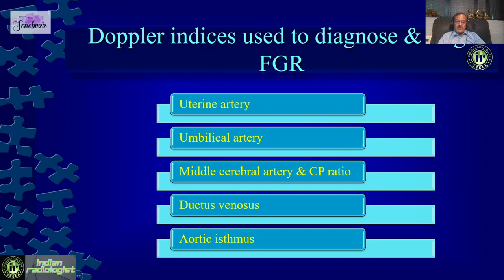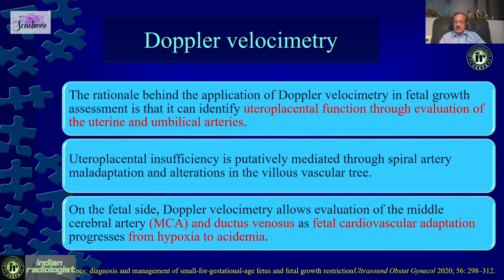The uterine arteries and umbilical arteries give us an idea about uteroplacental function, whereas the MCA, ductus venosus, and aortic isthmus give us an idea about fetal cardiovascular adaptation and the changes which happen progressively from hypoxia to acidemia. Some indices show chronic deterioration — for example, umbilical artery or MCA — whereas some indices like ductus venosus show something is going acutely wrong. We need to keep this in mind when making decisions.